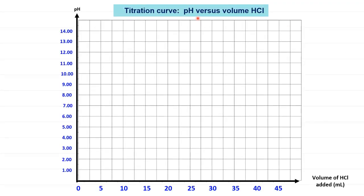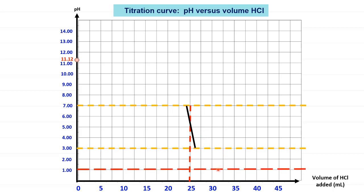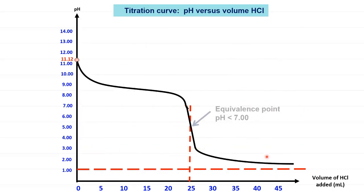All the information gathered is now plotted on the titration curve of pH against volume of HCl as the titrant. The first point is at volume = 0 and pH = 11.12, followed by the equivalence point at volume = 25 mL with pH less than 7. The pH jump is between 3 and 7, where the steep curve is drawn, and the final pH approaches 1. Don't forget to label the equivalence point pH on the diagram, which is less than 7.